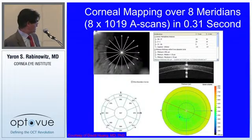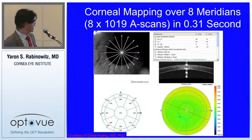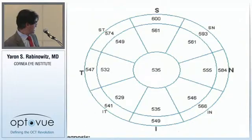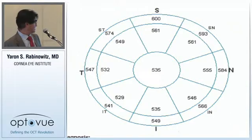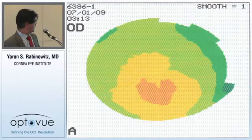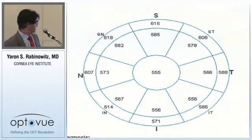The nice thing about OCT is it gives you pachymetry data on multiple points, accurately and reproducibly. Here's a patient with obviously abnormal topography — maybe early keratoconus — where the pachymetry value inferiorly stayed the same as the centerline when it should be getting thicker, making that patient highly suspicious. A more subtle case shows some inferior steepening where the cornea should be a lot thicker inferiorly and hasn't become so — that's the kind of patient you want to rule out.